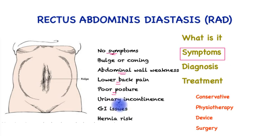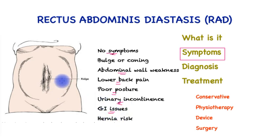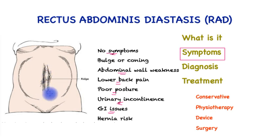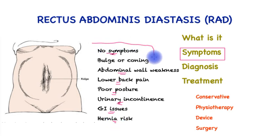In women especially after pregnancy, those with pelvic floor weakness may develop urinary incontinence. Rarely, issues such as constipation are worsened because of ineffective core musculature. If there is excess thinning of the linea alba, it may raise the risk of a ventral hernia. However, the great majority of patients have either no symptoms or just a bulge and coning.